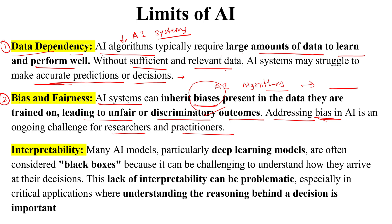The third limit is interpretability. Many AI models, particularly deep learning models, are often considered as black boxes. Black box means we do not know their internal structure — we do not know how they arrive at their decisions internally.